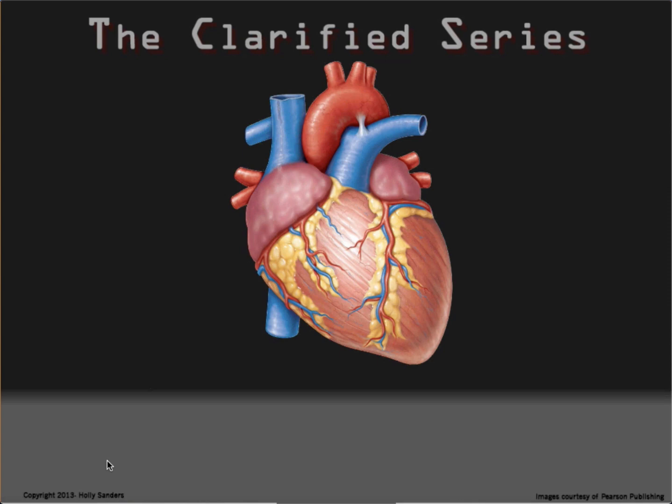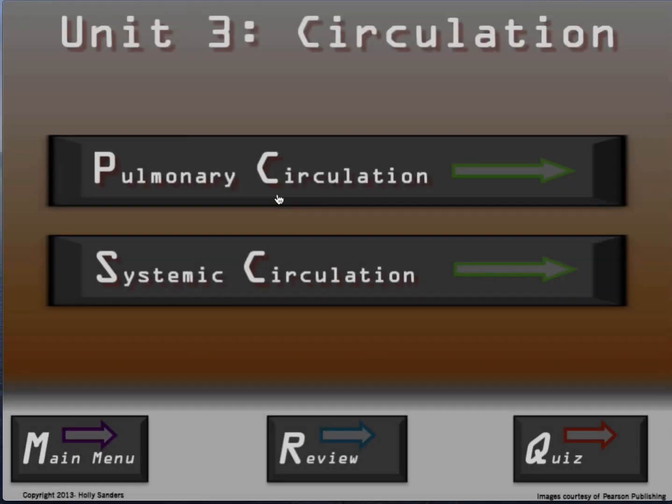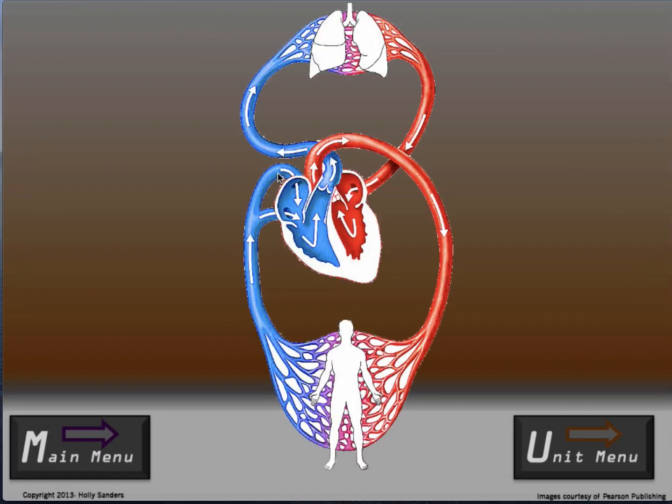Hello, this is Holly Sanders and I would like to welcome you to the Clarified series. In this segment, we will be covering the heart. Now that you have learned the structural anatomy and understand how blood travels through the heart, let's look at how blood circulates through the body.